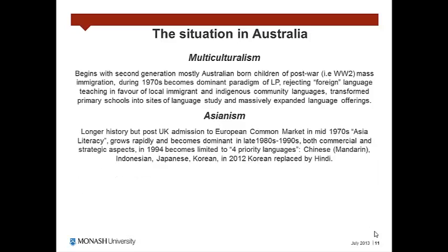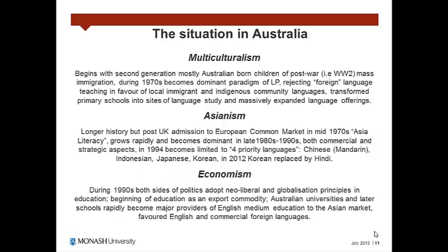Asianism has a longer history and strongly emerged due to the post-UK admission to the European common market in the mid-70s. Asian literacy grew rapidly and became dominant in the late 1980s for both commercial and strategic aspects. In 1994, it was reduced to four priority languages: Chinese Mandarin, Indonesian, Japanese, Korean. In 2012, Korean was replaced by Hindi. Economism appeared during the 90s. Both sides of politics adopted neoliberal and globalization principles in education. Education began to be considered as an export commodity. Australian universities and later schools rapidly became major providers of English-medium education to the Asian market, favouring English and commercial foreign languages.